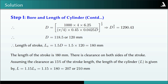The stroke length is 180 mm, but on both sides of the stroke some clearance is necessary. We assume 15% of the stroke length as clearance, so the length of the cylinder L is 1.15 × Ls = 207 mm, rounded up to 210 mm.